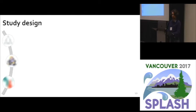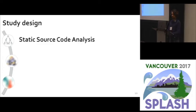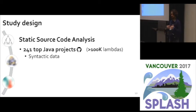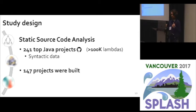We designed a study drawing on three different sources. First, we gathered 2,000 top Java projects from GitHub, parsed them into their ASTs, and found that only 241 projects were using lambda expressions, accounting for more than 100,000 lambda expressions. We collected information for each one — number of parameters, where in the code they appear, and their parent node in the AST. We then successfully built 147 of those projects, which was important for gaining binding information on about 60,000 lambda expressions.